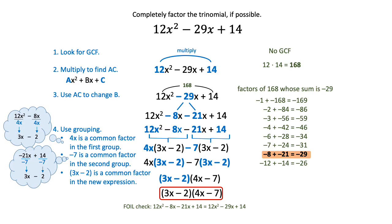Alright, and for this trinomial, it doesn't have a GCF. AC is 168. This breaks into a negative 8 and a negative 21 for the negative 29. That's your B. And then as you group, you will lead to a final answer of (3x - 2)(4x - 7).